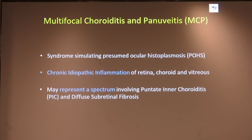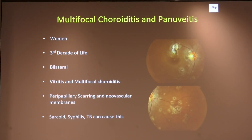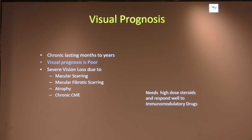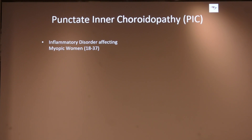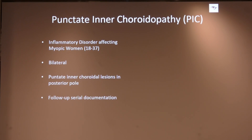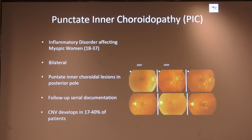Multifocal choroiditis with pan-uveitis syndromes simulate POHS — chronic idiopathic inflammations representing a spectrum involving punctate inner choroidopathy and diffuse subretinal fibrosis. I wanted to highlight punctate inner choroidopathy in particular: it is a bilateral inflammatory disorder with punctate choroidal lesions in the posterior pole. Good serial follow-up is essential. With documentation over time, 17% to 40% of these cases develop CNV. One of my patients followed up for almost five years showed CNV developing at the end of follow-up.